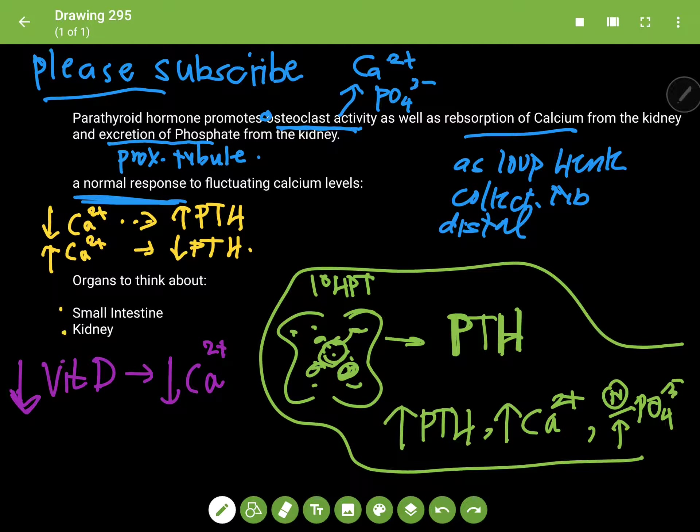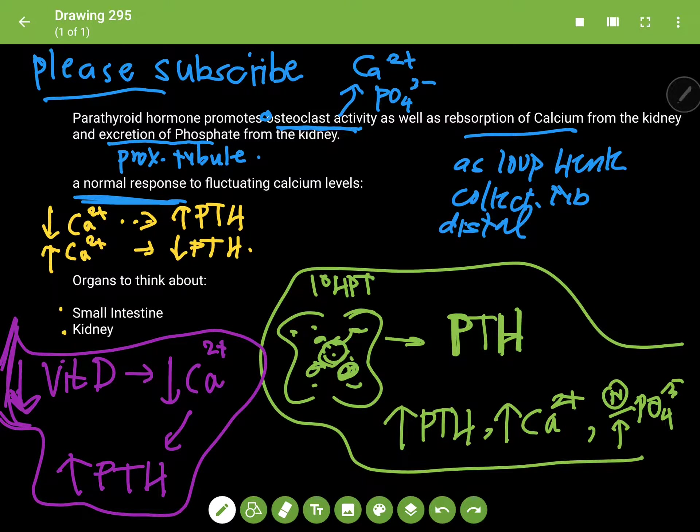Your parathyroid gland is going to respond and it's going to secrete out more parathyroid hormone. In this case, you were going to also have an absolute decrease in phosphate, because we're talking about vitamin D here, and vitamin D promotes absorption of both phosphate and calcium. It's not really as discriminatory as the parathyroid hormone. So you're going to have a decrease in both phosphate and calcium in a secondary, and this is secondary because it's due to secondary causes.